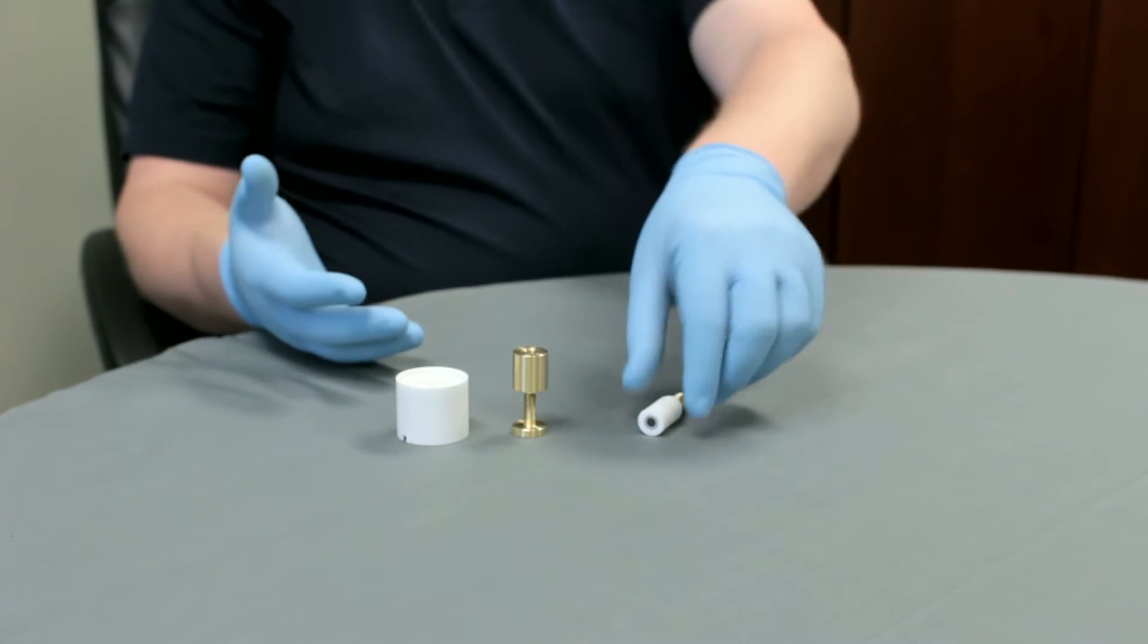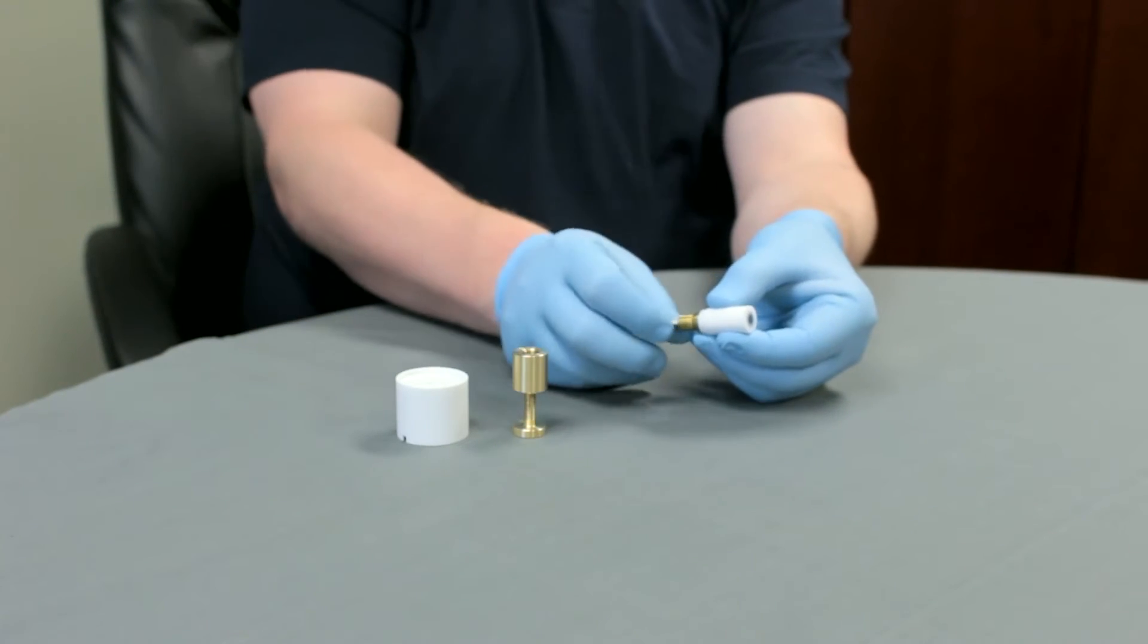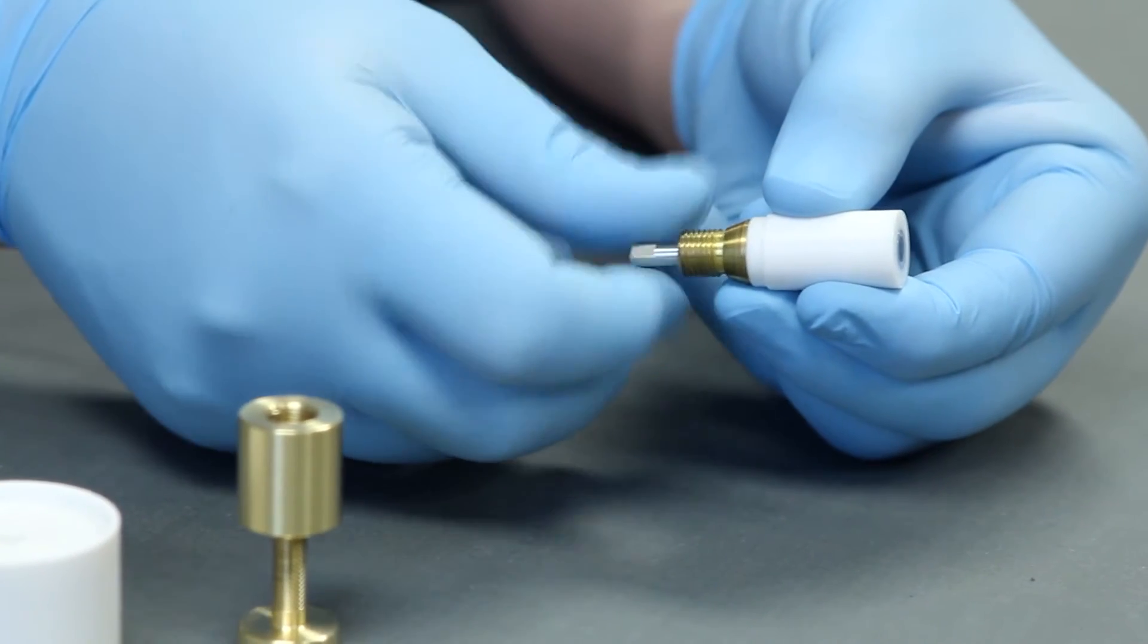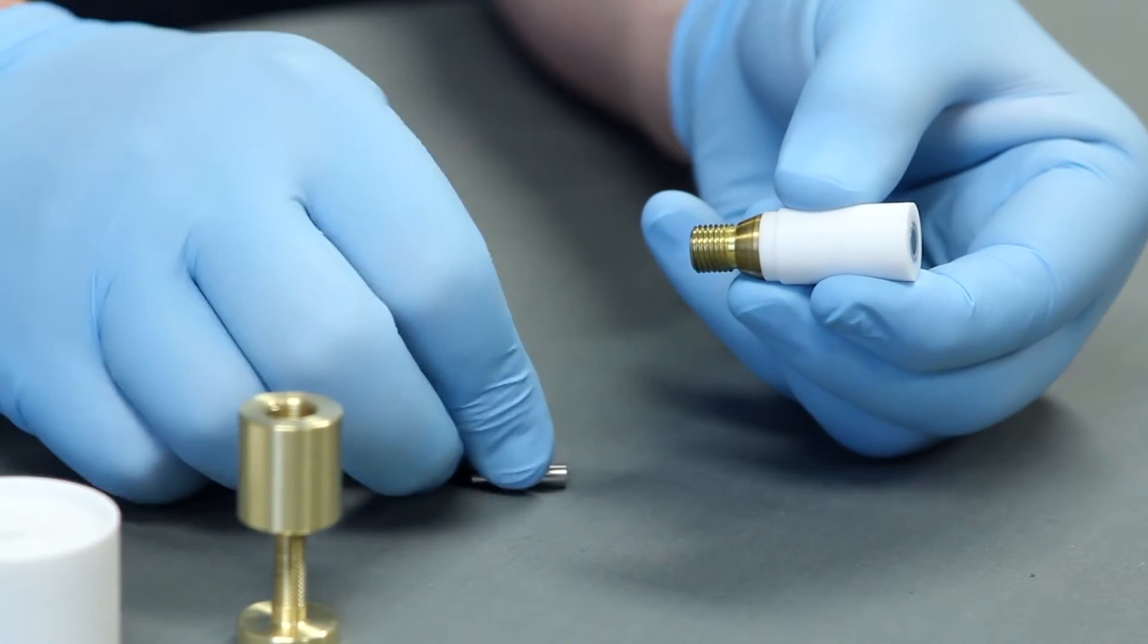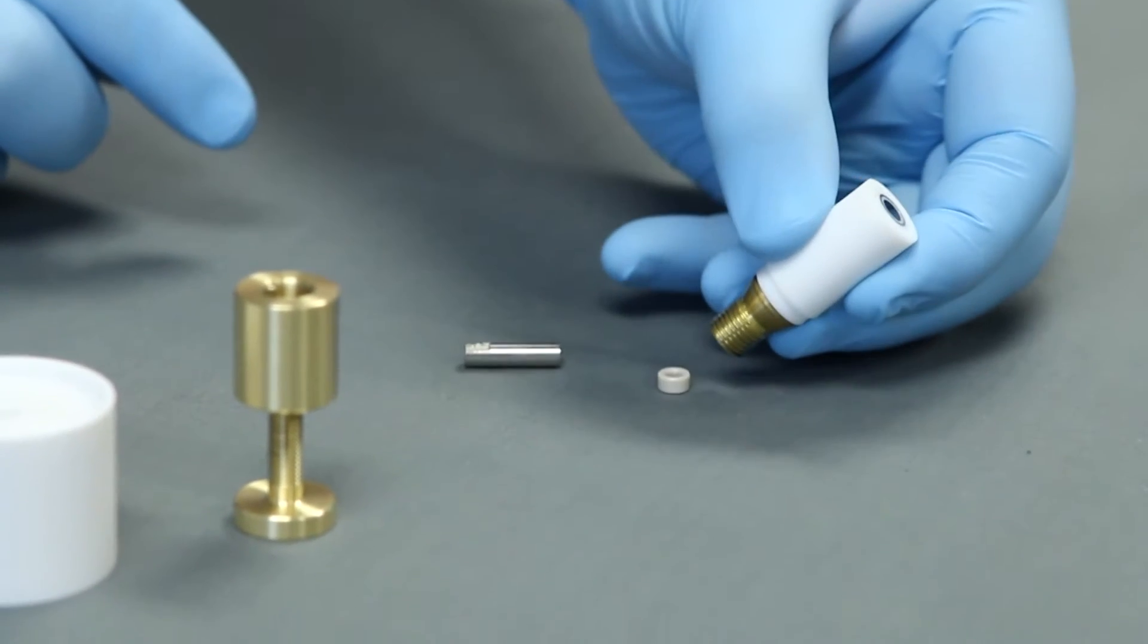To disassemble the electrode, you will want to begin by removing the disk core nut while holding the change disk electrode tip. Invert the tip so that the disk core washer will fall out.